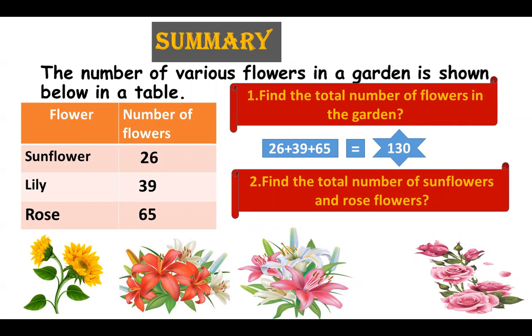Next find the total number of sunflowers and rose flowers. So 26 plus 65 equals 91.